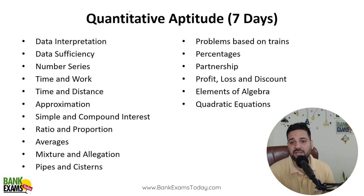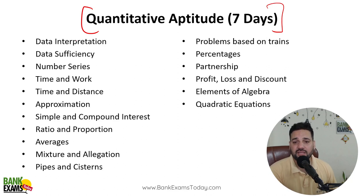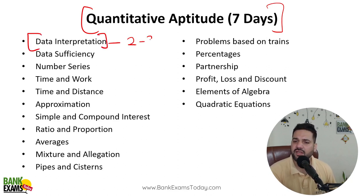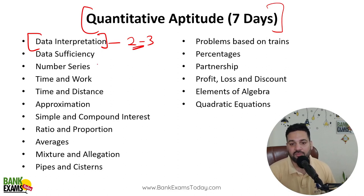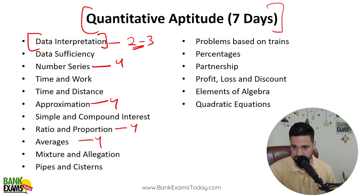In the study plan, for quantitative aptitude I would highly recommend that within 7 days you complete this section. Give it like 2 days for data interpretation practice, then on day 3-4 cover number series and approximation, followed by ratios, averages — somewhat easier topics. Then on day 5 you can do time and work.